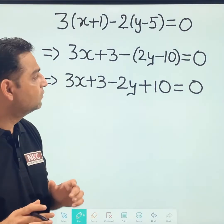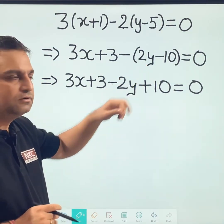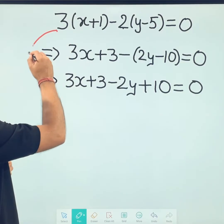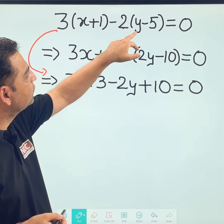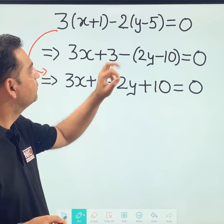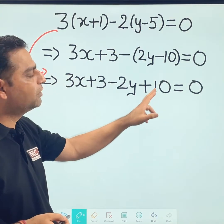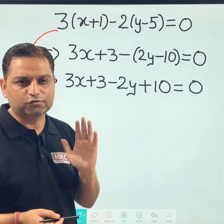Now, try to understand. I have written this step. You can directly write this step as well. If your concepts are clear, you can directly multiply minus 2 with y, it becomes minus 2y. Minus 2 with minus 5 makes it plus 10. Whichever way you are comfortable, you can use them.